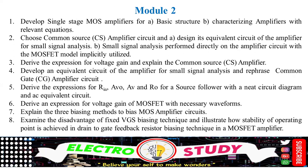Remaining questions: develop a single-stage MOSFET amplifier for basic structure, characterizing the amplifier with relevant equations. Choose the common source amplifier circuit and design the equivalent circuit for small signal analysis. Small signal analysis is performed directly on the amplifier circuit with the MOSFET model implicitly utilized. Derive an expression for voltage gain of a CS amplifier, develop an equivalent circuit for small signal analysis, and refresh the common gate amplifier circuit with derivation. Also, derive an expression for voltage gain of MOSFET with necessary waveforms.